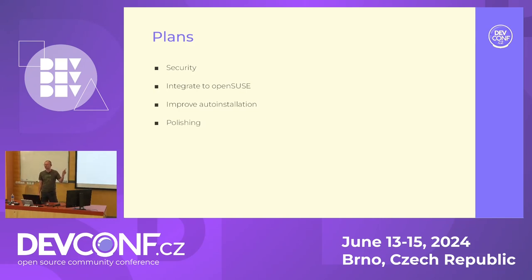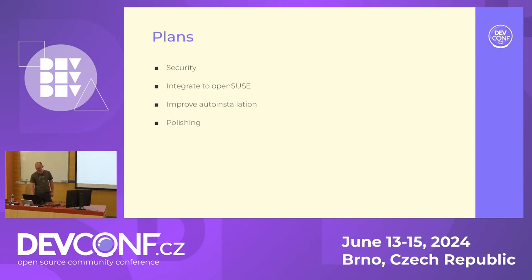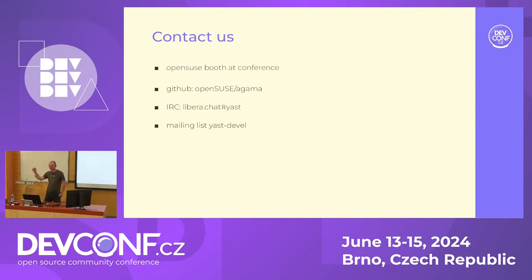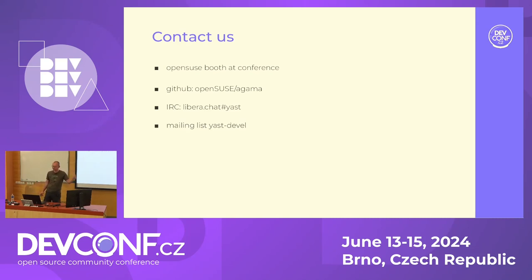Plans include a section about security — important to have a system secure from the first boot — and integration into OpenSUSE, which is planned to be discussed at the OpenSUSE conference in Nürnberg in two weeks. We also plan to improve auto-installation and collect feedback, plus some polishing since there are still rough edges. You can find us at the OpenSUSE booth, on GitHub with source code, discussions and issues, IRC, and mailing list.